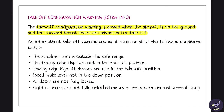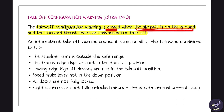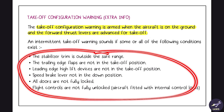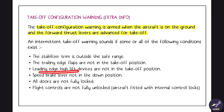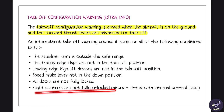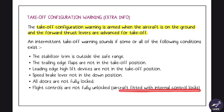Finally, takeoff configuration warning is armed when the aircraft is on the ground and the forward thrust levers are advanced for takeoff. A warning sound is triggered if any of the following conditions exist: stabilizer trim out of safe range, trailing edge flaps not in takeoff position, leading edge high-lift devices not in takeoff position, speed brake lever not in the down position, all doors not fully locked, or flight controls not fully unlocked.